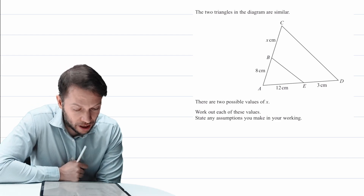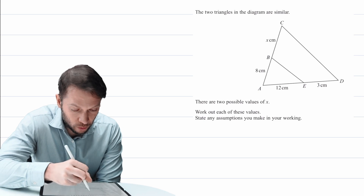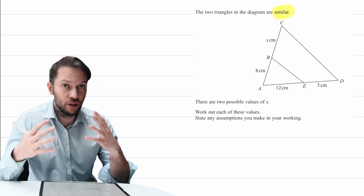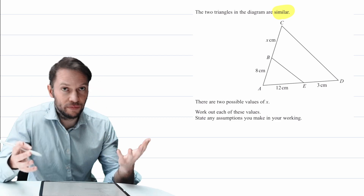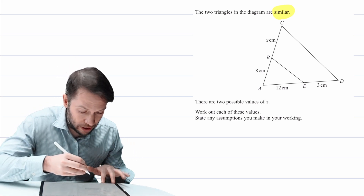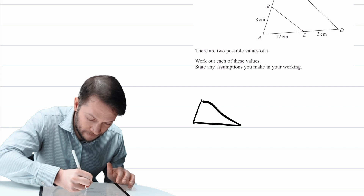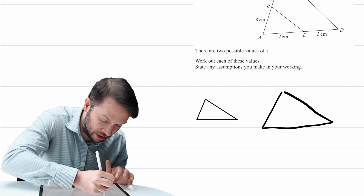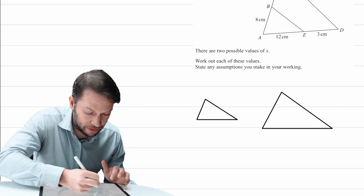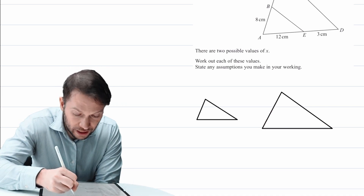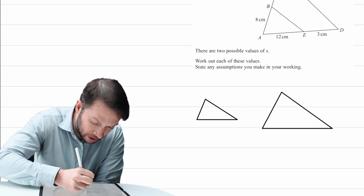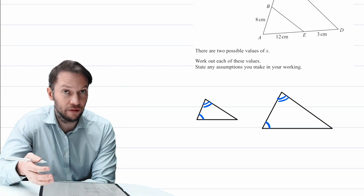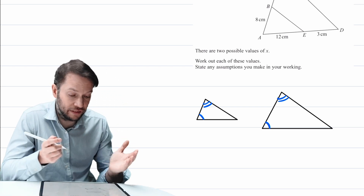So let's read this question. The two triangles in the diagram are similar. In case you don't know what 'similar' means in a mathematical context, it means that we have two triangles which are the same shape but just maybe different sizes. So for example, if we had a smaller triangle and then a bigger triangle, we can see that these are the same shape but one is bigger than the other. And if we say the same shape, we also say they have to have the same angles — this angle is the same as this one, the top one is the same, and so on. Same shape, different sizes — we say they are similar.